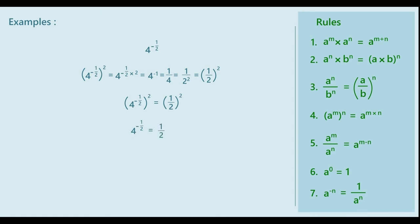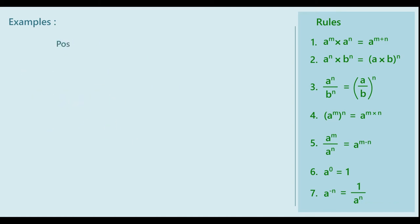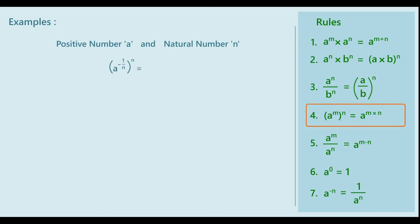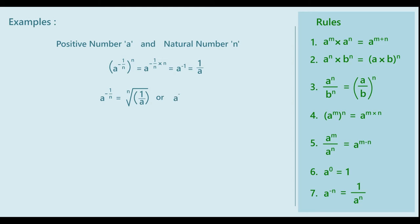Can we generalize this? Surely! For a positive number A and a natural number N, we can write: A raised to minus 1 upon N, whole raised to N, is equal to A raised to (minus 1 upon N into N), which is A raised to minus 1, or 1 upon A. Hence, A raised to minus 1 upon N is equal to 1 upon A raised to 1 upon N.